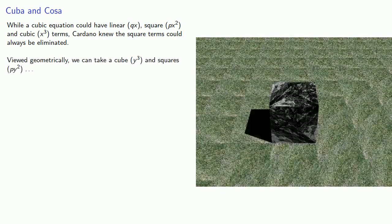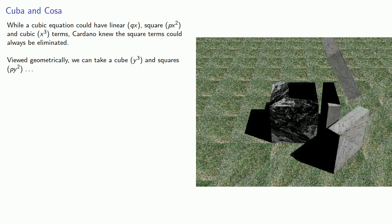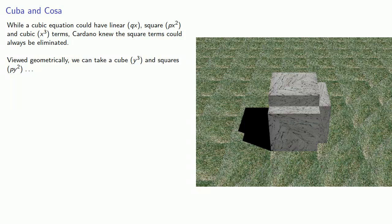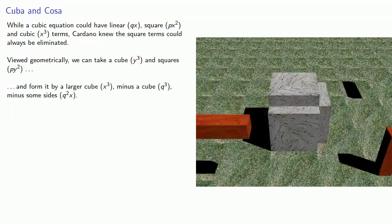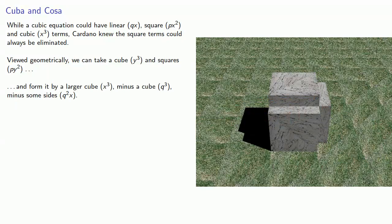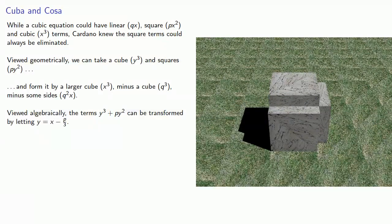Viewed geometrically, we can take a cube y³ and squares py² and form it from a larger cube x³ minus q³ minus some sides q²x. Viewed algebraically, the terms y³ + py² can be transformed by letting y equal x minus p/3.